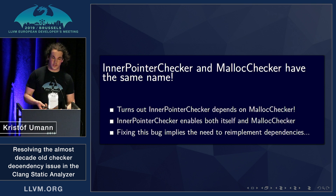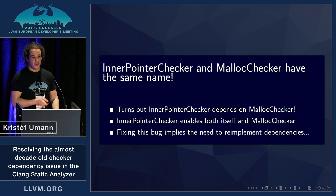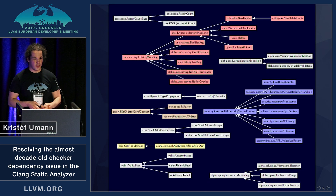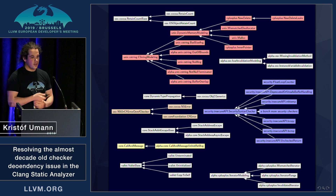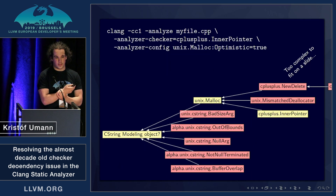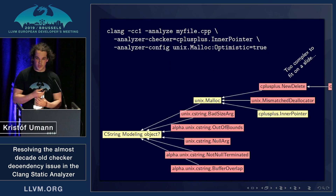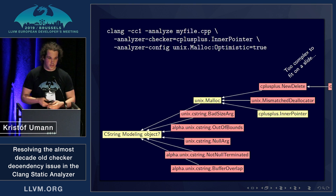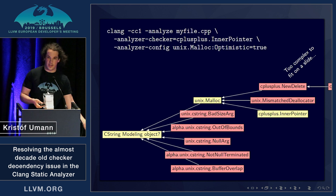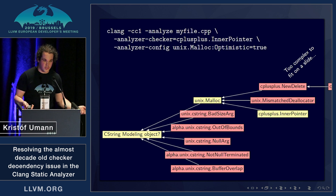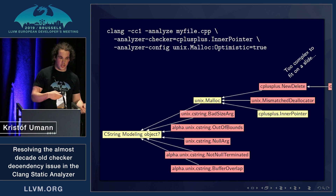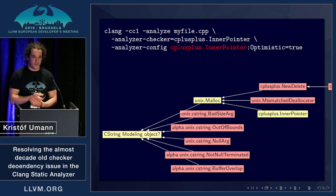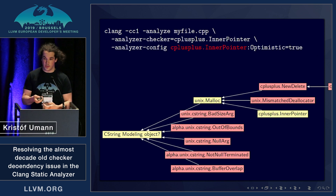We initially thought that checker dependencies were few and far between, but as you can see on this very incomplete graph, the checker dependency structure is very common — a lot of checkers depend on one another. To demonstrate how this error happened: inner pointer depends on malloc, and malloc in fact depends on another C string modeling checker. When inner pointer is enabled, it enables malloc checker and this C string modeling checker, and all of these will receive the same name — that is how this issue came about.